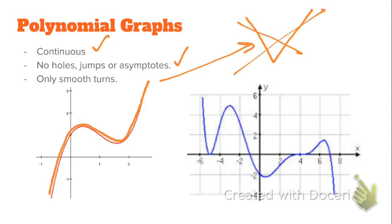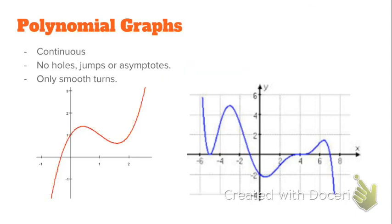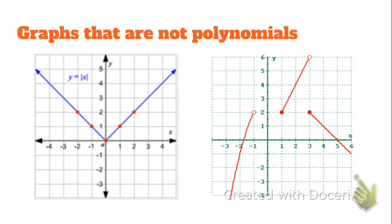So there are two examples of polynomials right there and what their graphs will look like. Graphs that aren't polynomials: the one on the left, like I mentioned earlier, is an absolute value because that's a sharp turn — y equals the absolute value of x is not a polynomial. But even without that equation, you could just tell by looking at the graph. Same thing with the one on the right — that's a piecewise function, and it's not a polynomial because of the discontinuities.